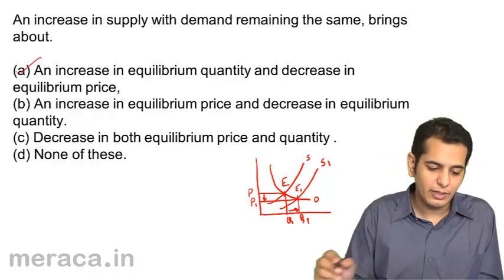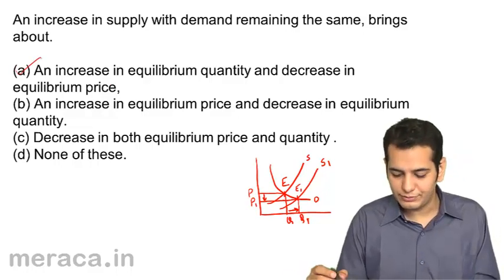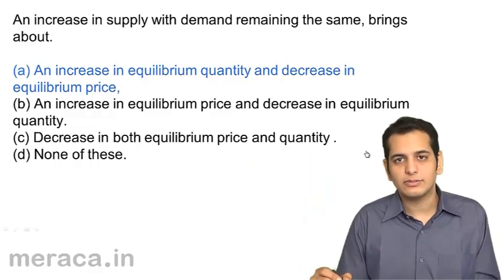So we can say that there is an increase in equilibrium quantity and decrease in equilibrium price — a should be the answer. Let's check. That's the answer.